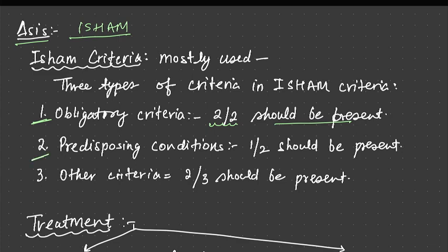Predisposing conditions should be present: one out of two. Two predisposing conditions are there: one is cystic fibrosis, second is bronchial asthma. Either one of the two should be present. Other criteria include a list also. There are three criteria and two out of those three criteria should be present. So ISHAM criteria is used for diagnosis.